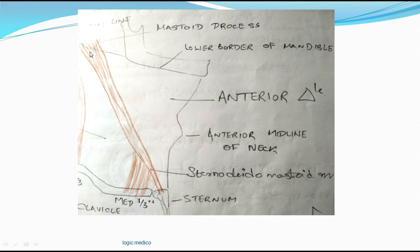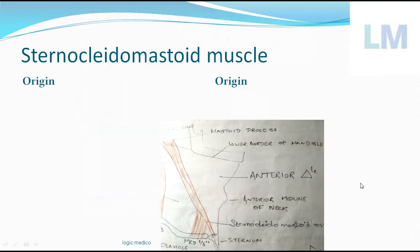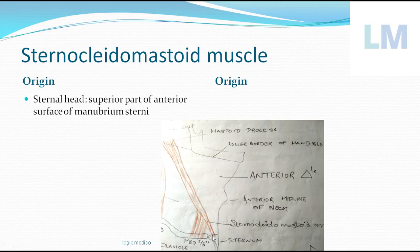This oblique muscle divides the neck into the anterior triangle and posterior triangle — that is for general knowledge. The origin of this muscle has two heads. The sternal head takes origin from the uppermost portion of the sternum, which is called the manubrium sterni, specifically from its superior part.